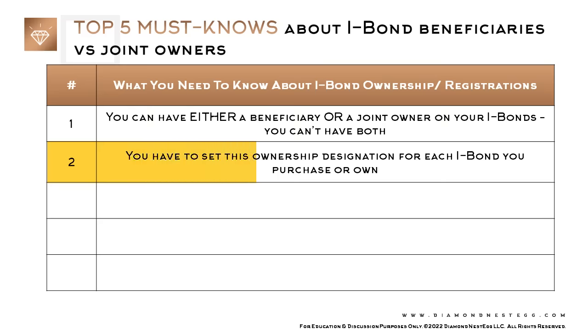Number two: you have to set this ownership designation for each iBond you purchase or own. So for example, if I bought two $1,000 iBonds this year — let's call them iBond A and iBond B — I could designate my husband Marcus as the beneficiary or joint owner on iBond A, and say my sister or anyone else I wanted as the beneficiary or joint owner on iBond B.